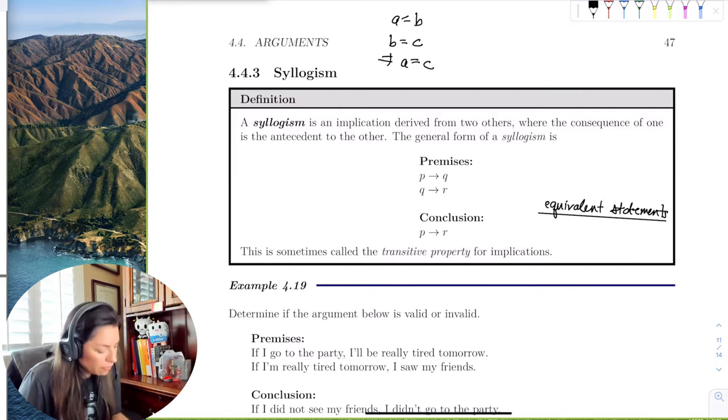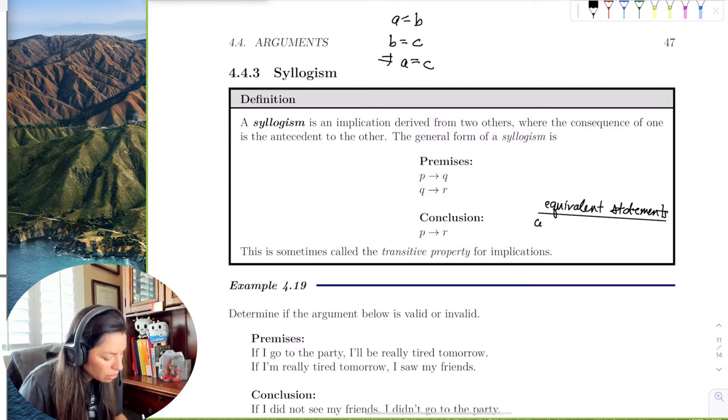Well, it was the contrapositive. It says if P, then R, then the equivalent statement would be the contrapositive, which was if not R, then not P.